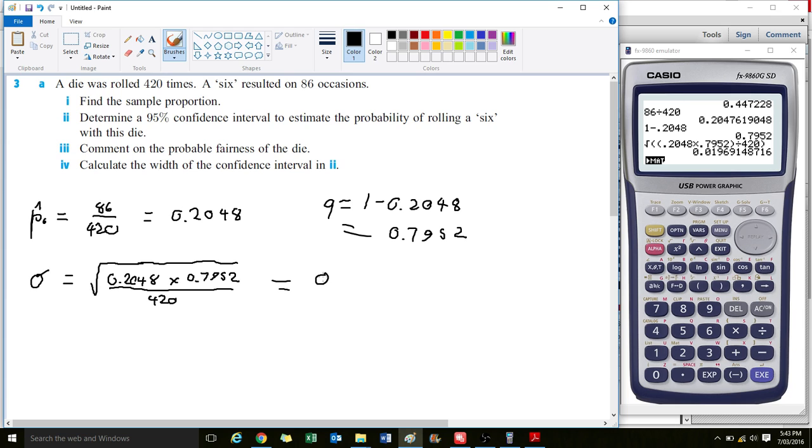The standard deviation or standard error is 0.0197. Our confidence interval is going to be P plus 1.96 times the standard deviation, and P minus 1.96 times the standard deviation.